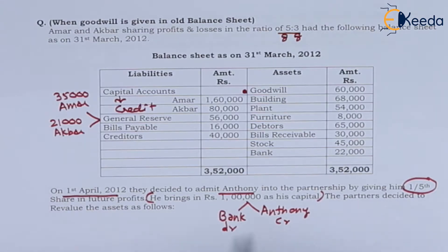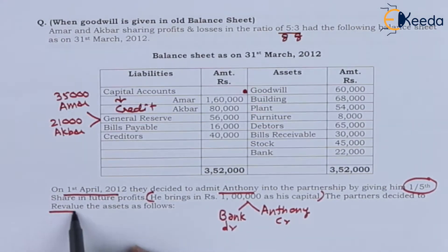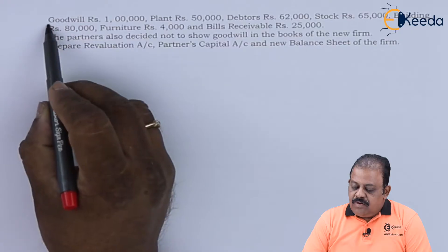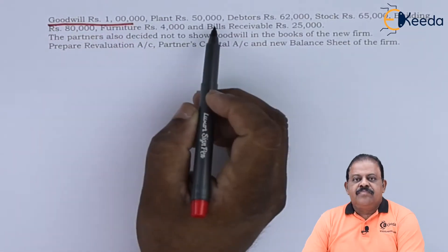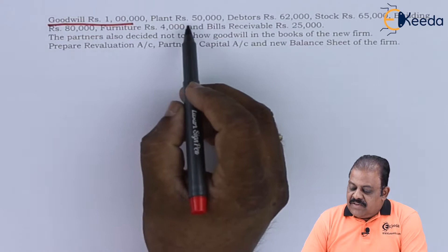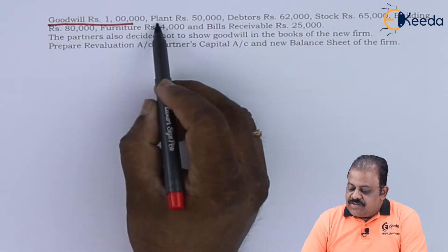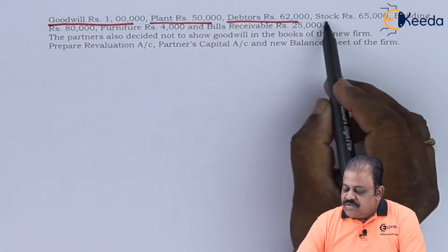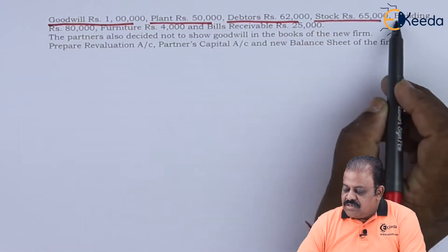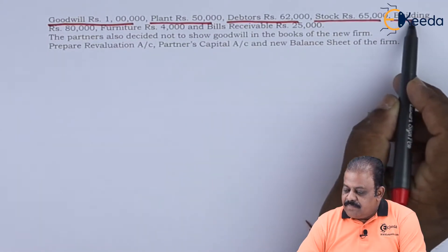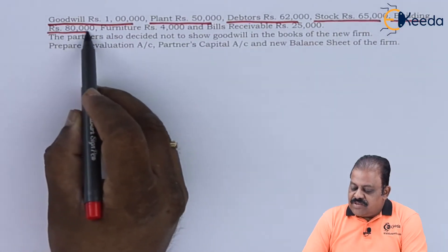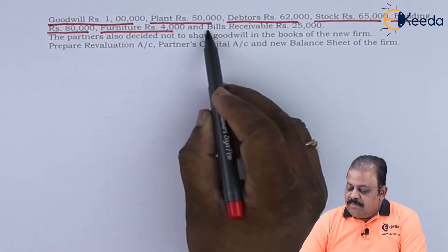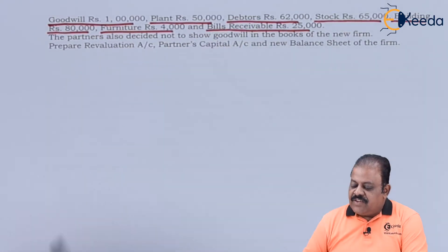The partners decided to revalue the assets as follows: goodwill 1,00,000; plant 50,000; debtors 62,000; stock 65,000; building 80,000; furniture 4,000; and bills receivable 25,000. There is adjustment on every asset.